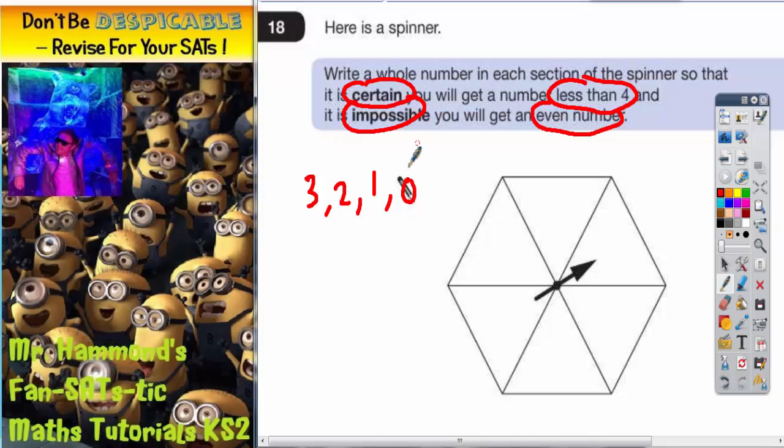It is impossible that you will get an even number. So impossible means it can't happen, so we can't get even numbers. So which numbers in this list are less than four but not even?